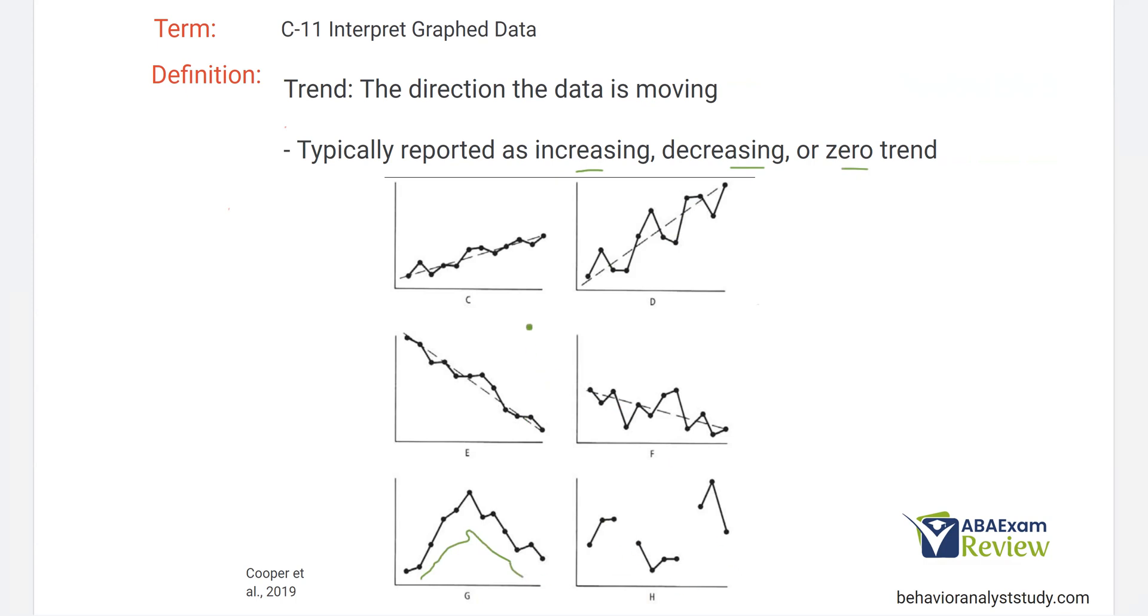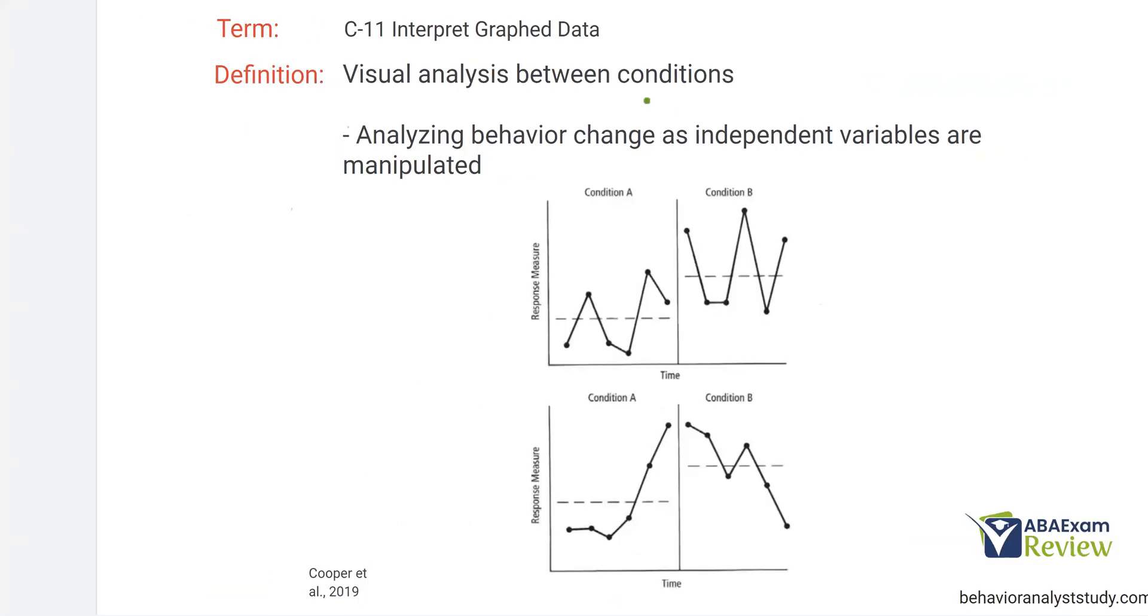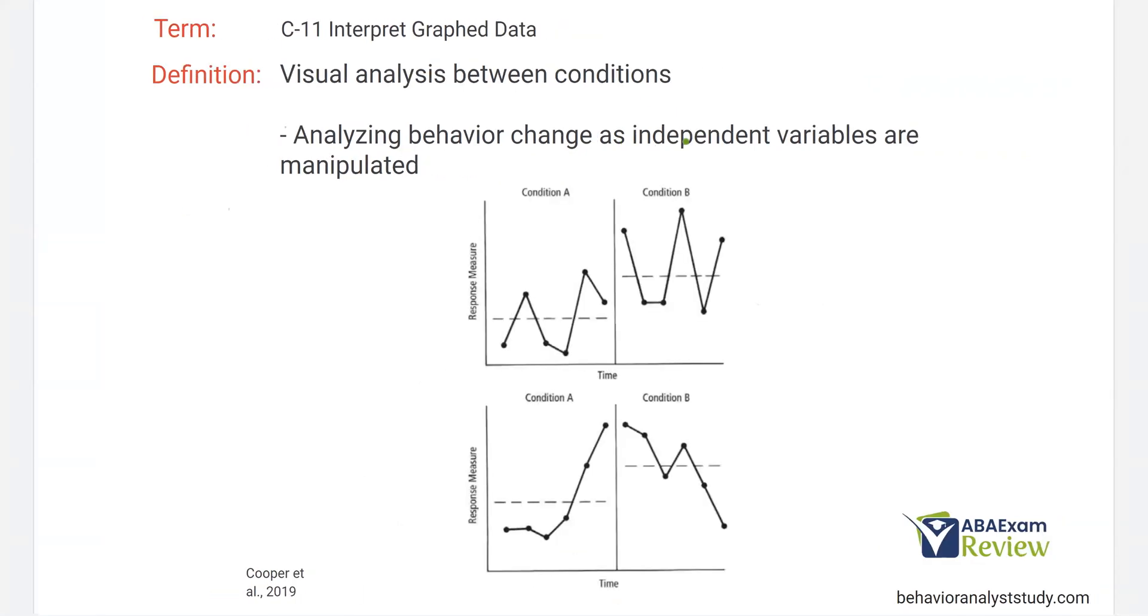So all three of those combined are going to give you a really good idea of what the data has done. And that is within each condition. Now, once you have each condition, then we have to compare across conditions. And this is when we take things like our level. So if you see condition A, if this was baseline, let's just call it that. And this is intervention.